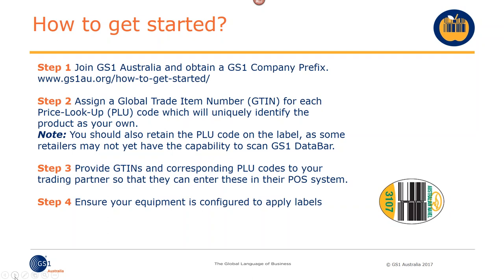You then need to allocate numbers to your different varieties on a one-to-one basis with the PLU code. If you currently identify different size breaks with different PLU codes, you would have that same number of barcode numbers. Once you allocate your barcode numbers, you need to advise your trading partners what those numbers are — otherwise when the barcodes are scanned, there'll be no data on file and nothing will come up. Also look at your equipment, the redesigning process, the artwork, and so forth.